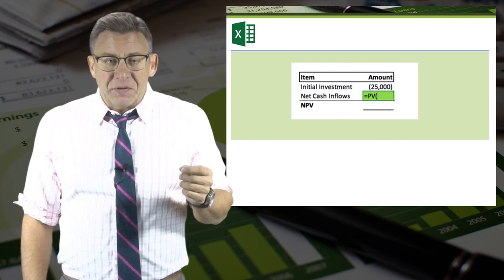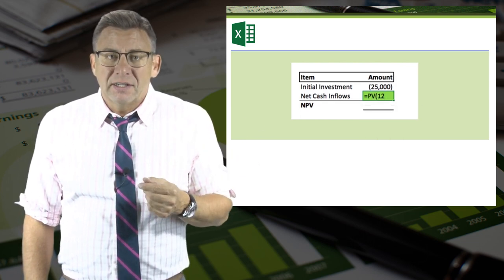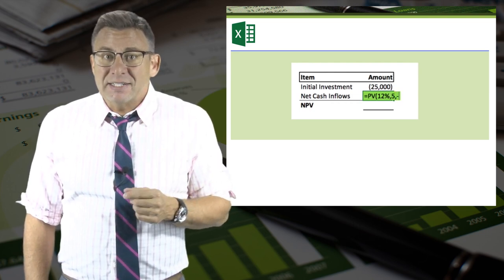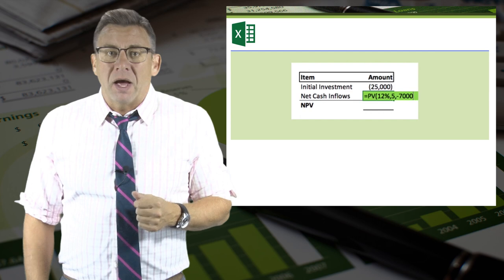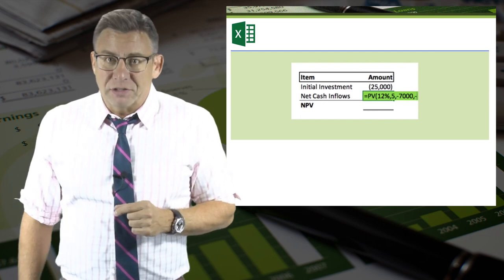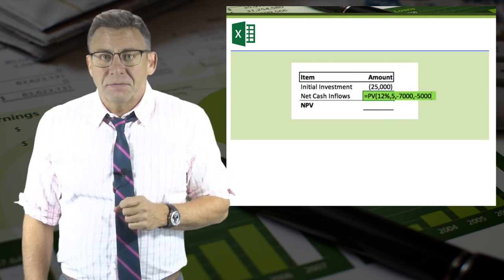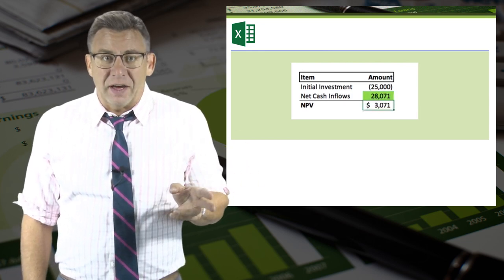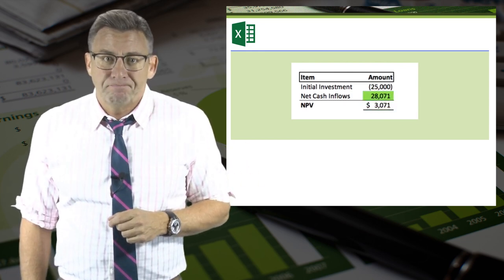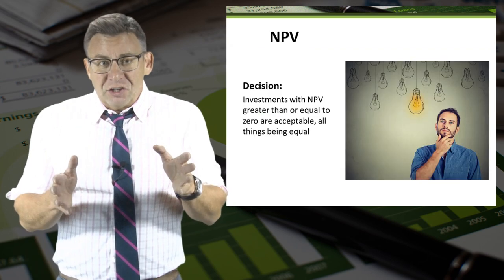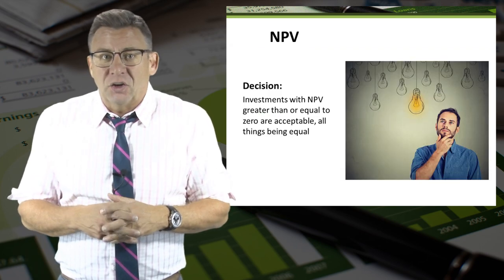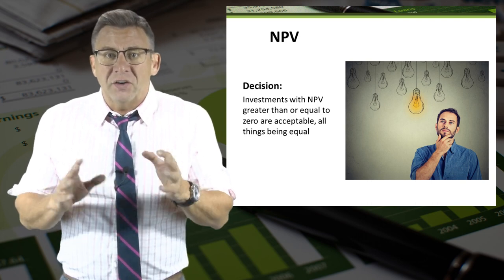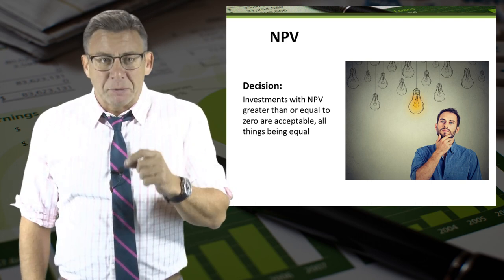I enter: equals PV, open parentheses, 12%, comma, 5, comma, minus 7000, comma, minus 5000, close parentheses. And that gives me a present value of $30,071. Our decision guidelines for net present value are: investments with net present values greater than or equal to zero are acceptable, all things being equal.